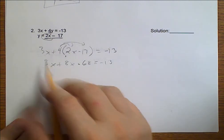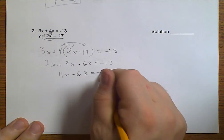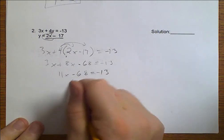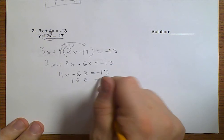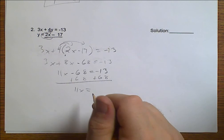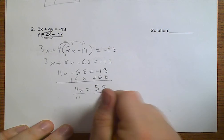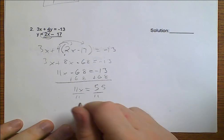11X minus 68 is negative 13. We add 68 to both sides. We get that 11X equals 68 minus 13 is 55. Divide by 11, then we get that X equals 5.